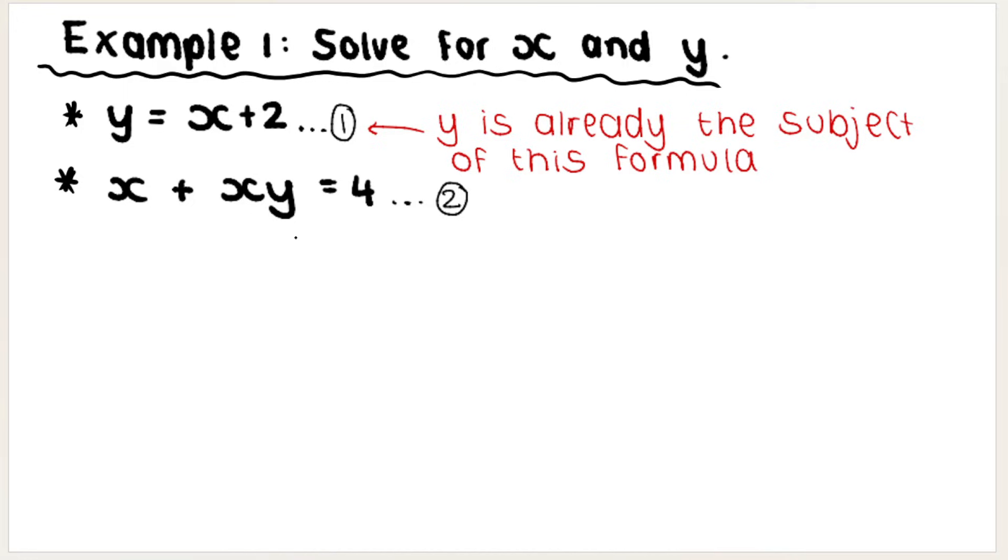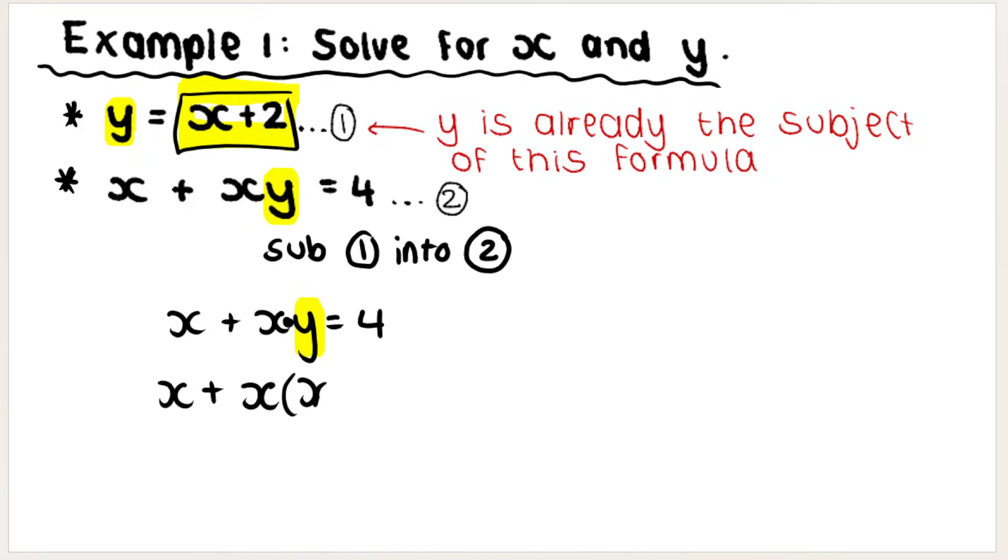So then I'm going to substitute equation 1 into equation 2. So what this means is I'm going to rewrite the second equation. It already looks a little more complicated. But now everywhere where I see a Y, instead of the Y, I'm going to put X plus 2. So instead of the Y, open bracket because this means multiplication, X plus 2 equals 4.